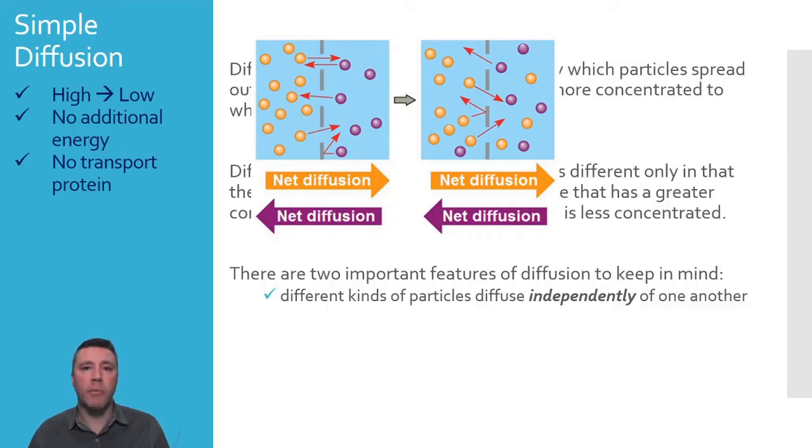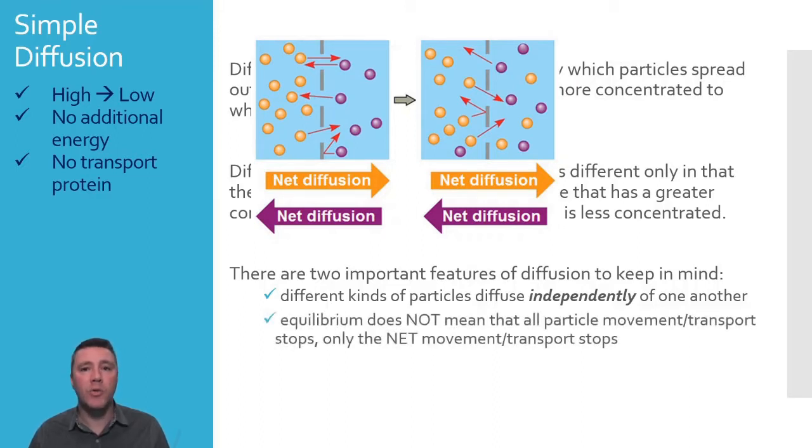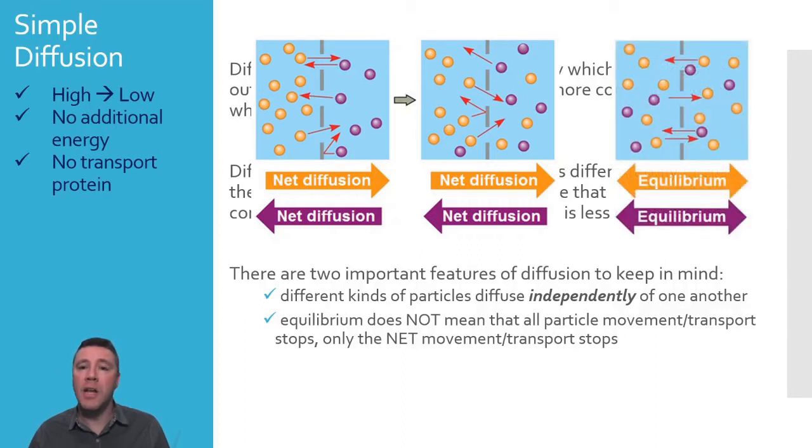The second point to remember about diffusion has to do with equilibrium. Equilibrium does not mean that particle movement or transport stops. It only means that the net movement stops. So, once equilibrium is achieved for every orange particle, for example, one that goes from the left to the right means another one will go from the right to the left.